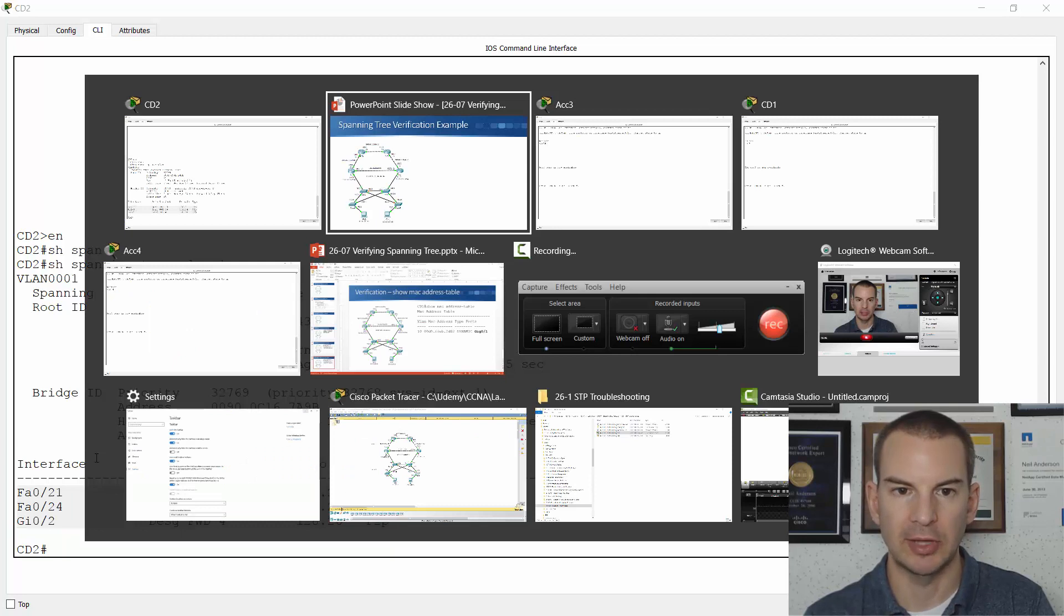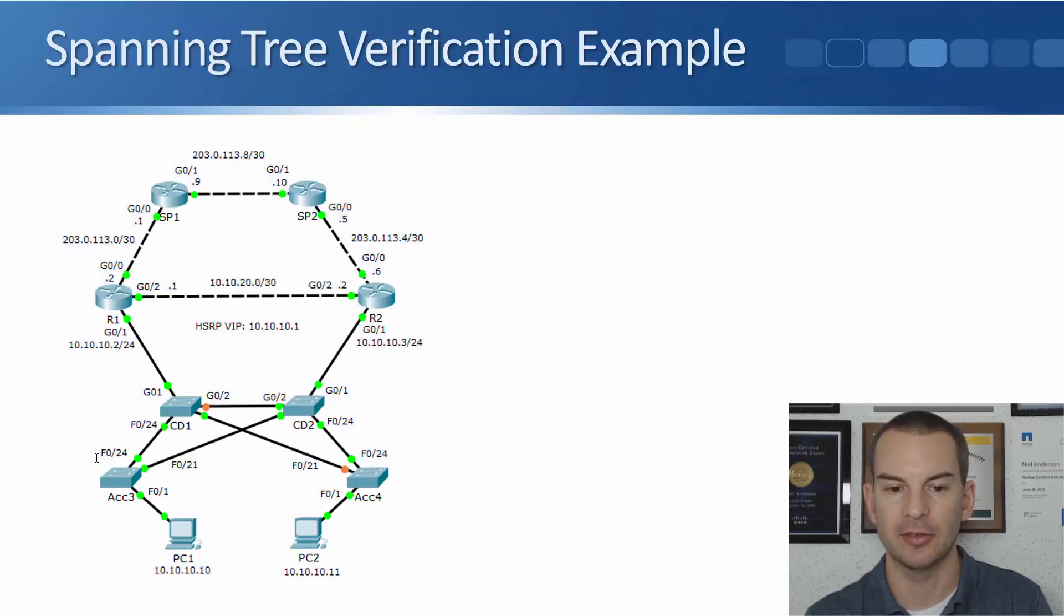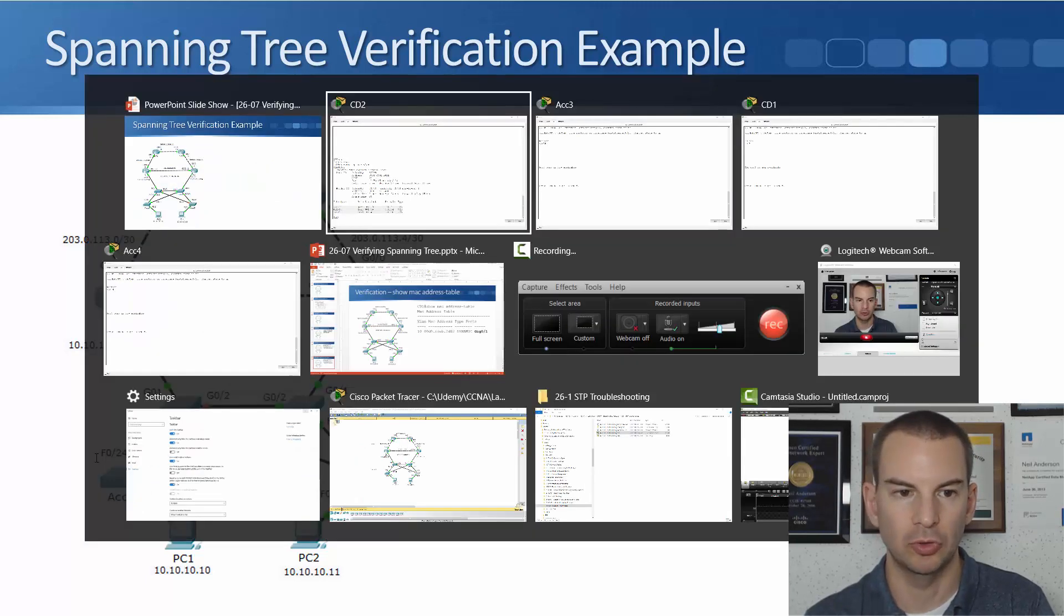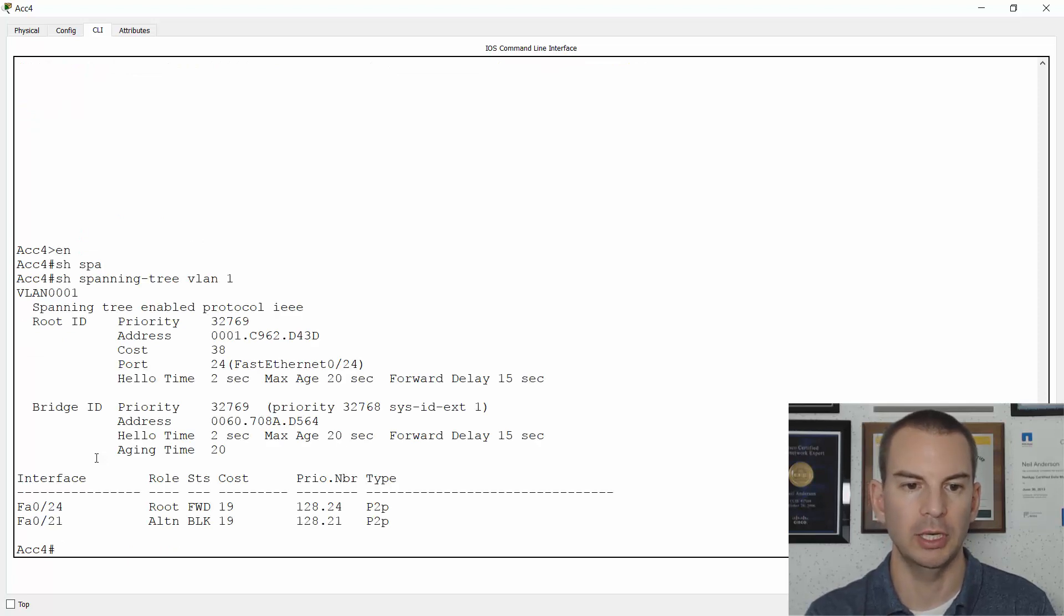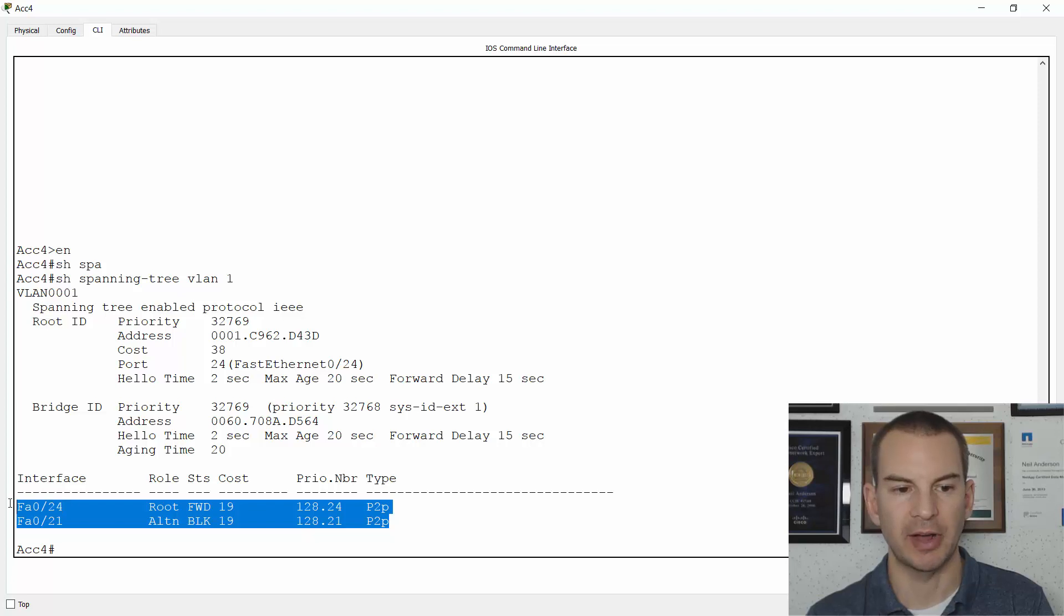Finally, let's look at the topology diagram again. The last switch to look at is access 4, which is forwarding on Fast0.24. That is the root port, and it's blocking on Fast0.21. So let's jump on to access 4 in the lab. Show spanning tree for VLAN 1. I can see it also agrees that the root bridge is access 3. This switch's MAC address begins with 0060, which is higher than the root bridge's MAC address. All of my switches are using a priority of 32768. The root port is Fast0.24, and the cost to get to the root bridge is 38. We're forwarding on port Fast0.24, and we're blocking on port Fast0.21.